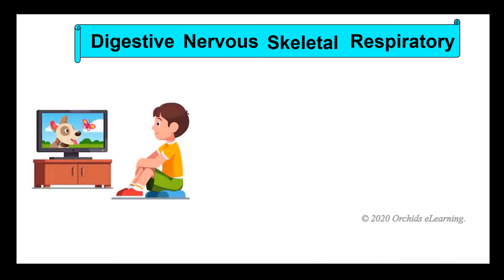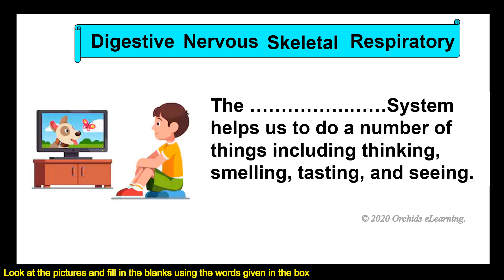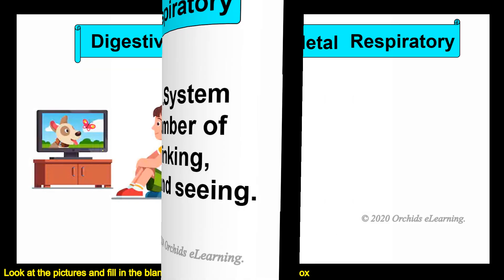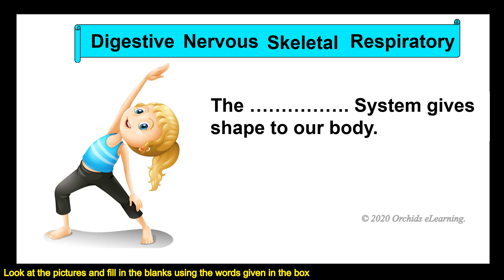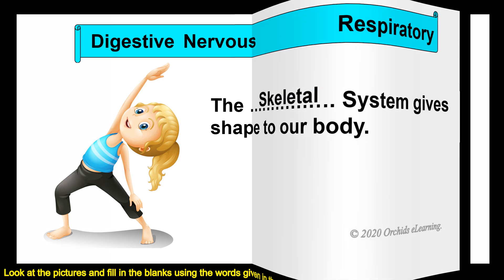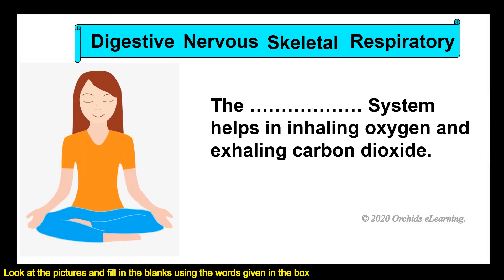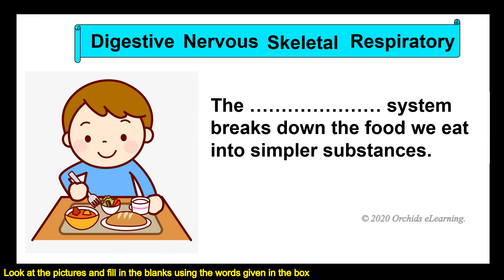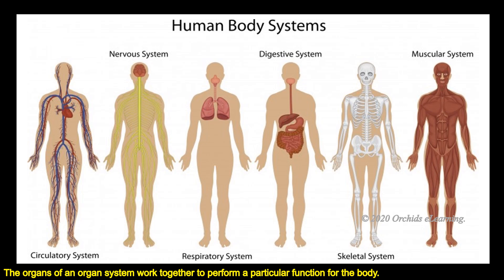Children, before starting the session, look at the pictures and fill in the blanks using the words given in the box. The nervous system helps us to do a number of things including thinking, smelling, tasting, and seeing. The skeletal system gives shape to our body. The respiratory system helps in inhaling oxygen and exhaling carbon dioxide. The digestive system breaks down the food we eat into simpler substances.